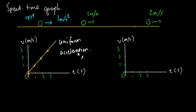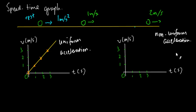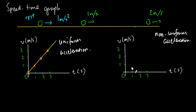For now, let me move on to the speed-time graph for non-uniform acceleration. What would that graph look like? Basically it is any graph on the speed-time graph that is not a straight line — meaning it can be a curve, or it can be a few straight lines of different slopes joined together. Let me just draw a curve like this — that represents non-uniform acceleration.